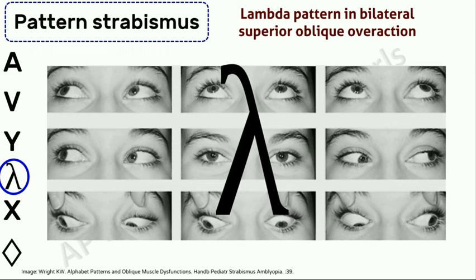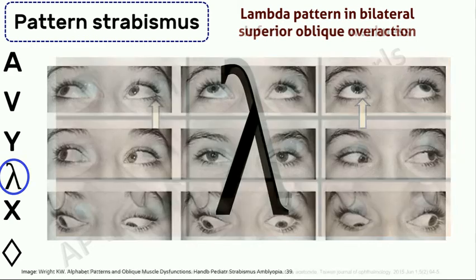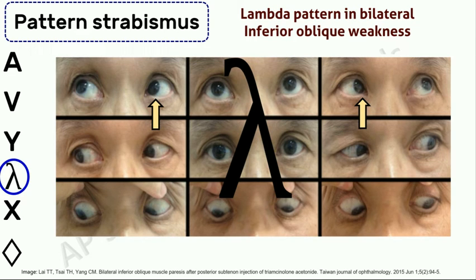The lambda pattern, an A pattern subtype, is characterized by divergence in downgaze without much change in the horizontal deviation from primary position to upgaze. A lambda pattern is most frequently associated with bilateral superior oblique overaction or inferior oblique weakness. The inferior oblique weakness is seen as a deficient elevation in adduction, a finding also seen in Brown syndrome. In Brown syndrome there is a Y subtype of V pattern strabismus, in contrast to the lambda subtype of A pattern that is seen in inferior oblique weakness.